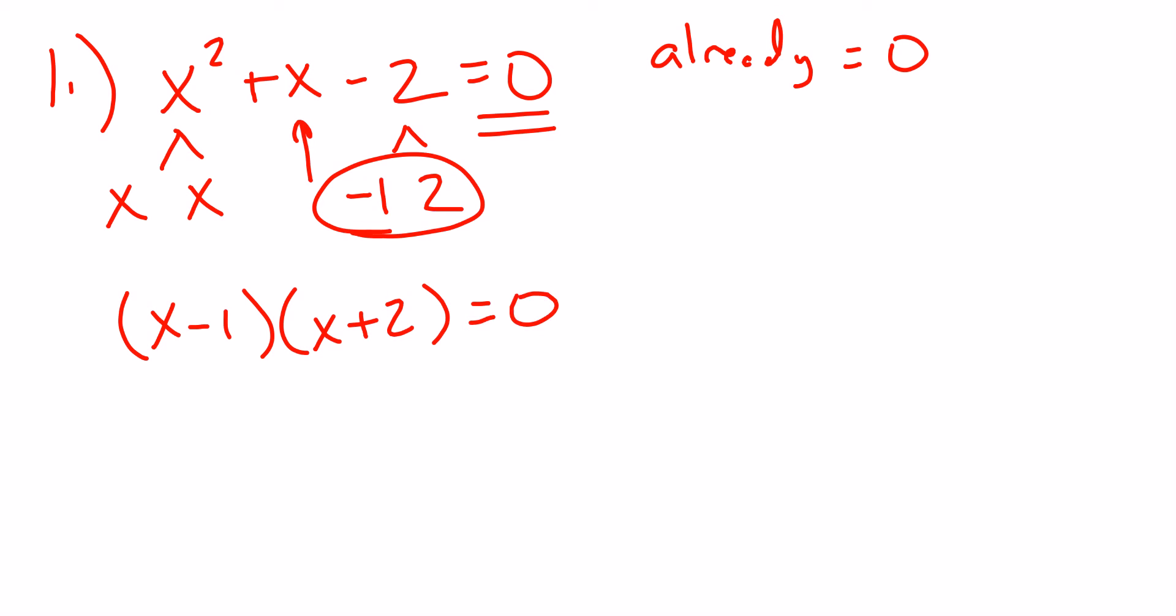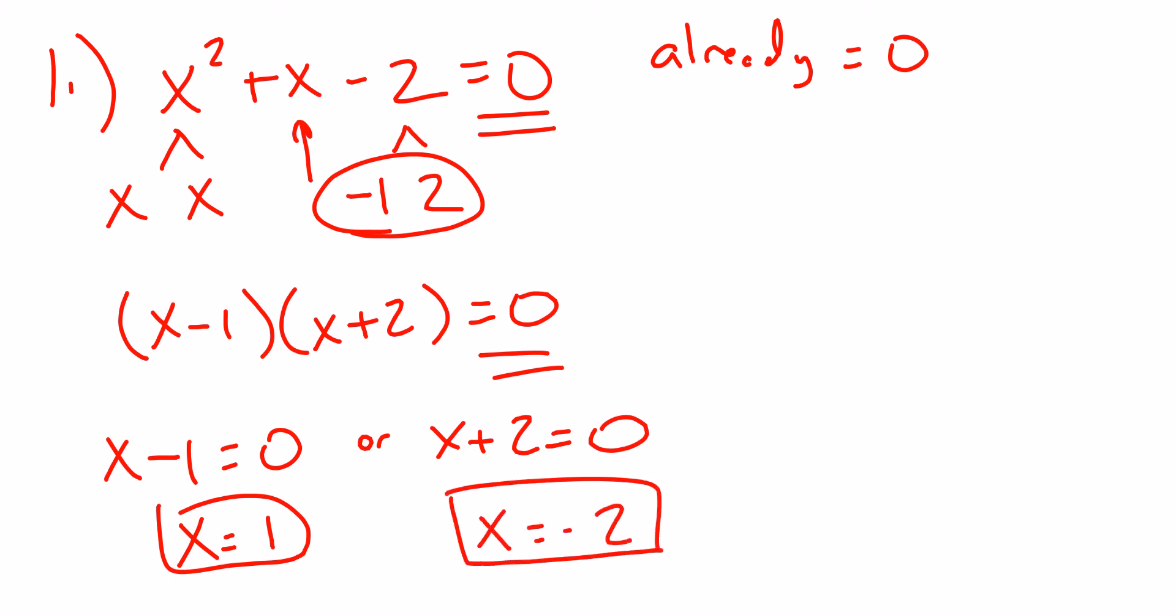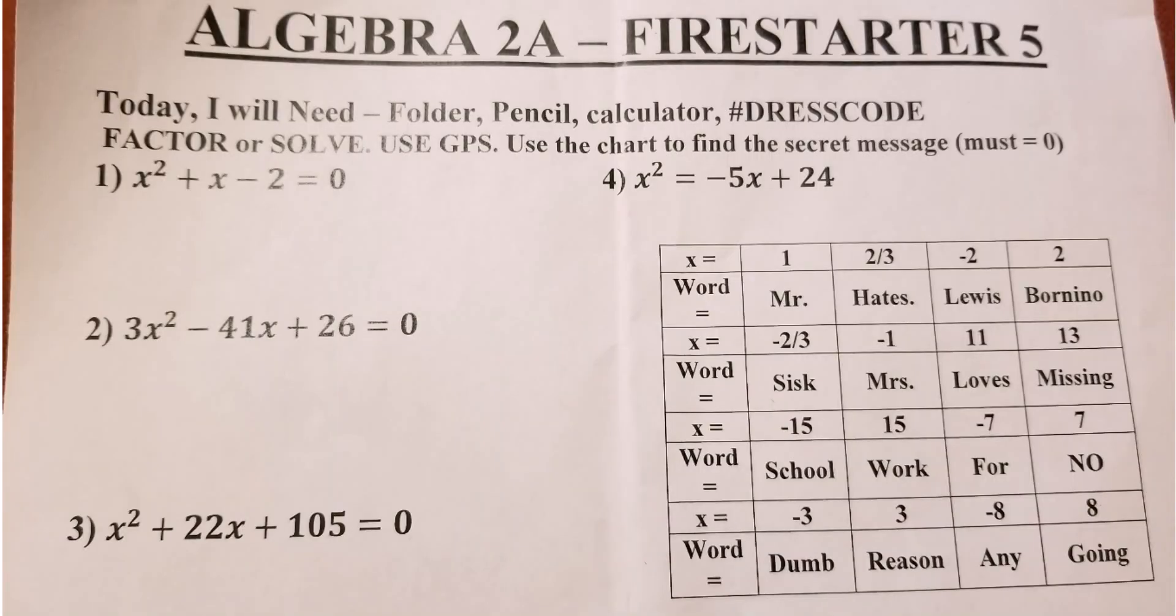Now since it equals 0 before, it still equals 0. And since this equals 0, you get to do this: x - 1 = 0, or x + 2 = 0. That means you're going to have two simple solve problems. For the first part, I'm going to add 1 to both sides. So x = 1. And then I'm subtracting from both sides, so x = -2. So I'm going to go over here, I'm going to look for 1 and -2. So I find 1, and it's Mr. So I know that since I have x = 1, I'm going to put Mr. Now -2, x = -2 is going to tell me to put Lewis.